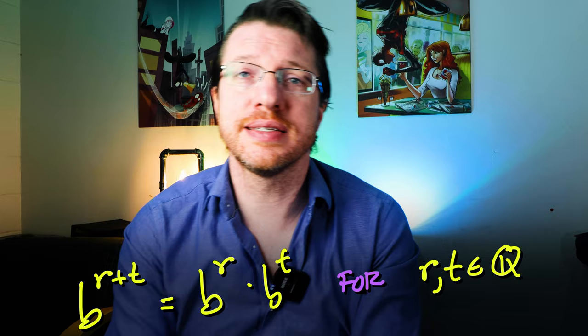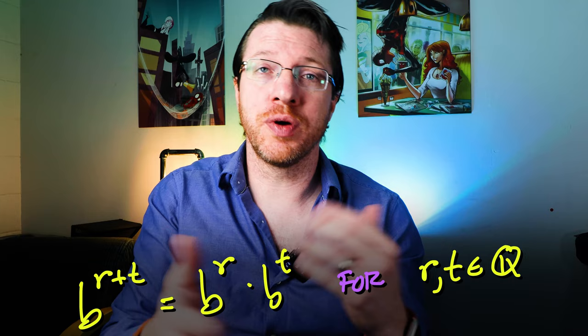The next part shows that B raised to the R plus T is the same as B raised to the R times B raised to the T. This, again, follows from uniqueness in theorem 1.21 and raising each side to the right power. But I'll leave that to you guys.